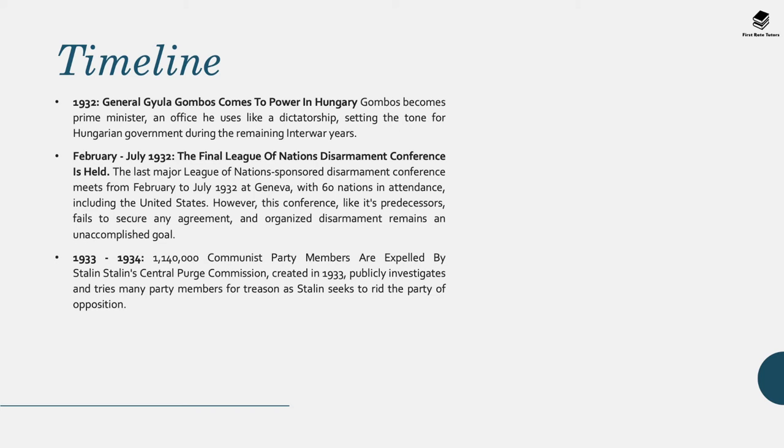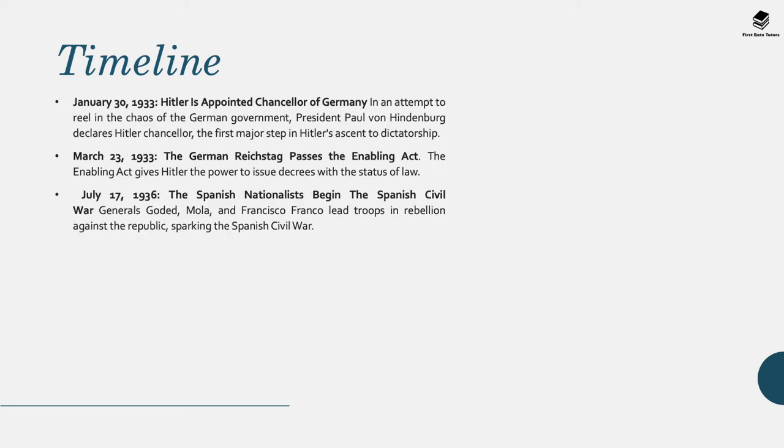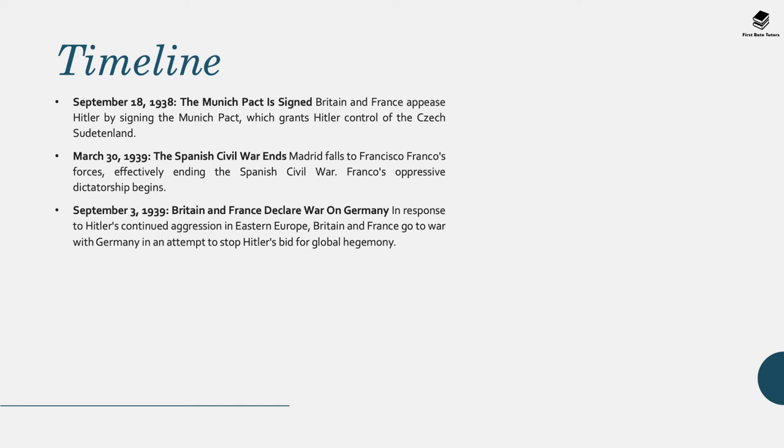Between 1932 and 1934, 1.1 million Communist Party members were expelled by Stalin's Central Purge Commission, created in 1933, which publicly investigated and tried many members for treason as Stalin sought to eliminate any opposition. In 1933, Hitler was appointed Chancellor of Germany, and in March of the same year the German Reichstag passed the Enabling Act, giving Hitler the power to issue decrees with the force of law — effectively making him a dictator. In 1936, the Spanish nationalists began the Spanish Civil War. In 1938, the Munich Pact was signed, with Britain and France appeasing Hitler by granting him control of the Czech Sudetenland. In 1939, the Spanish Civil War ended as Madrid fell to Francisco Franco's forces. In September 1939, Britain and France declared war on Germany in response to Hitler's continued aggression in Eastern Europe, setting the stage for the Second World War.